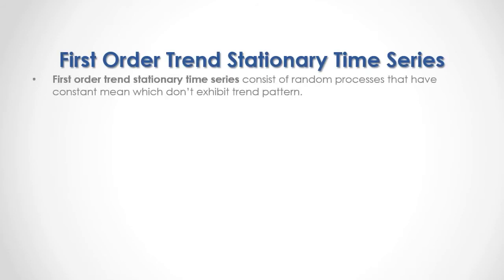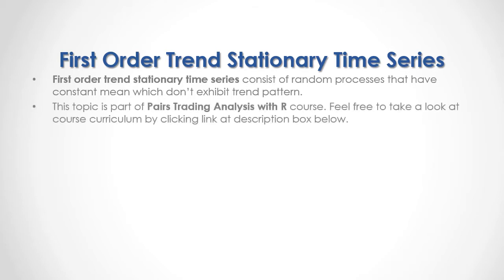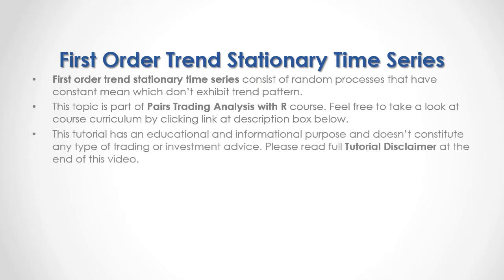First order trend stationary time series consists of random processes that have constant mean which don't exhibit trend pattern. This topic is part of PRRS training analysis with our course. Feel free to take a look at the course curriculum by clicking the link at the description box below. This tutorial has an educational and informational purpose and doesn't constitute any type of trading or investment advice. Please read the full tutorial disclaimer at the end of this video.